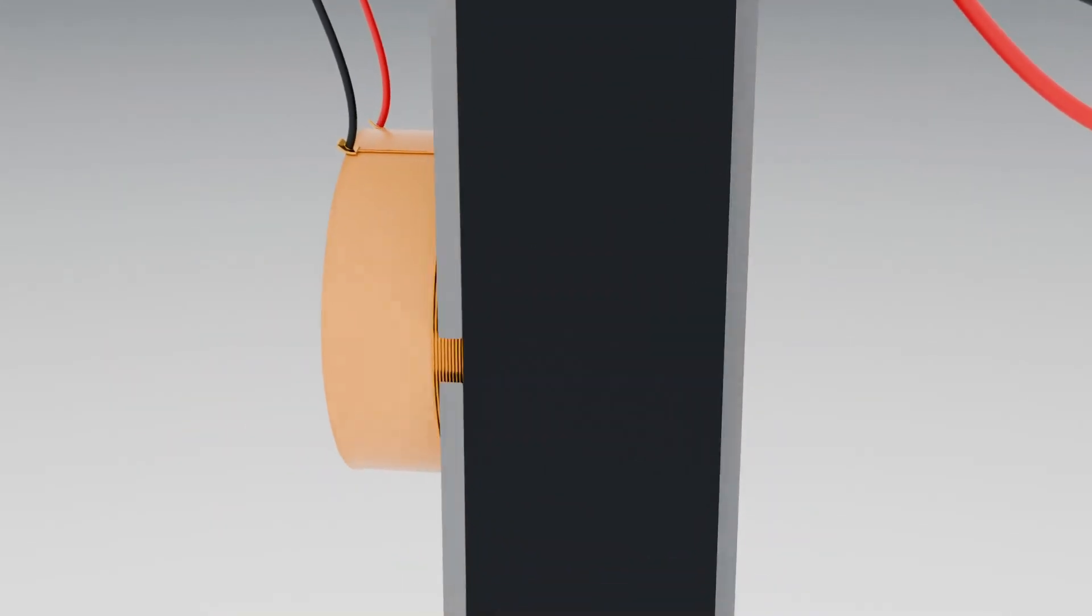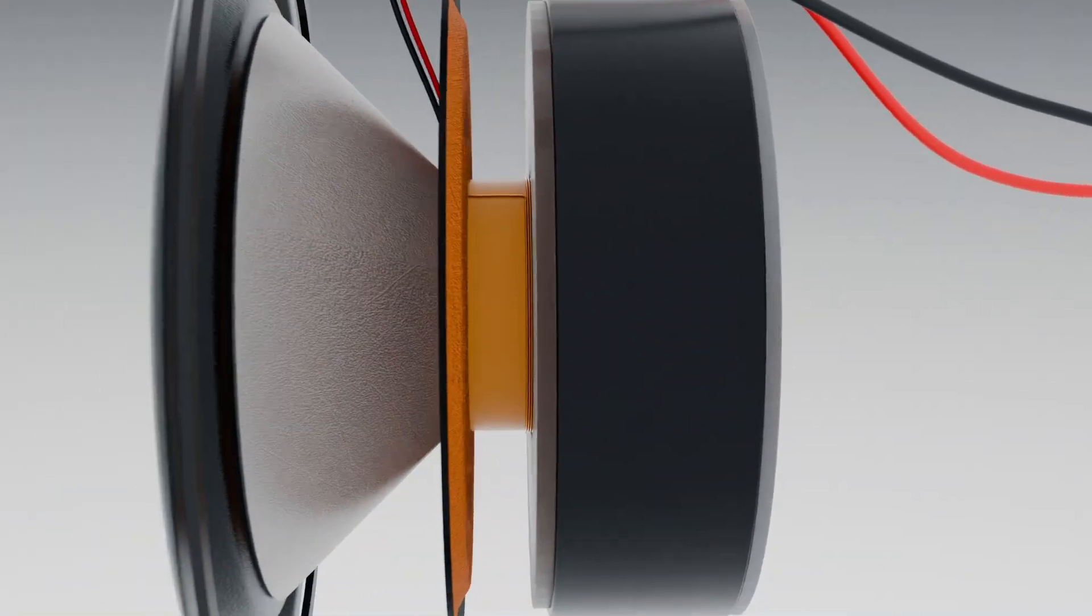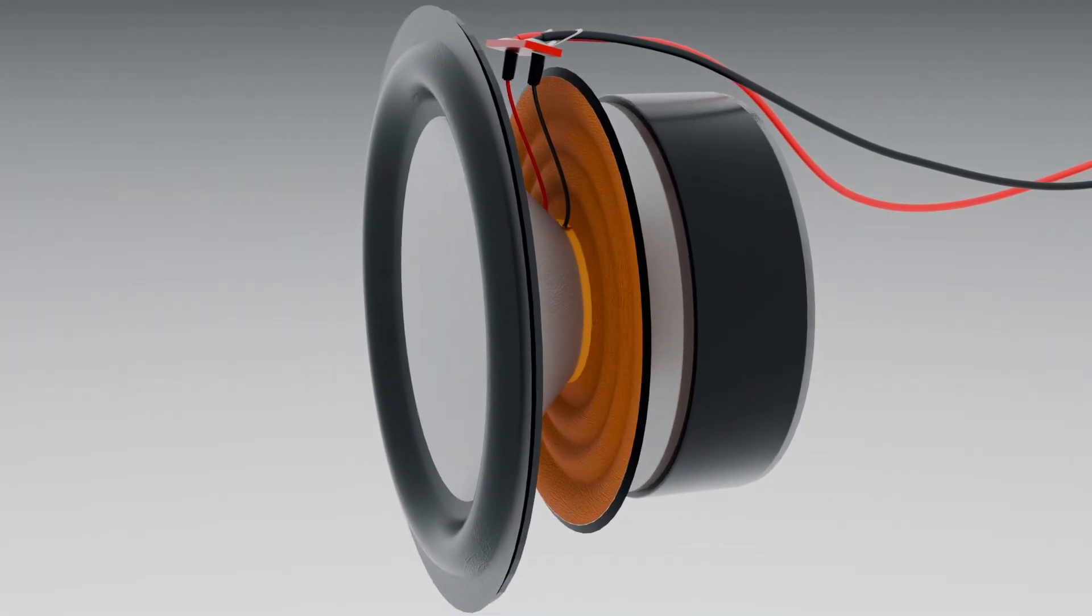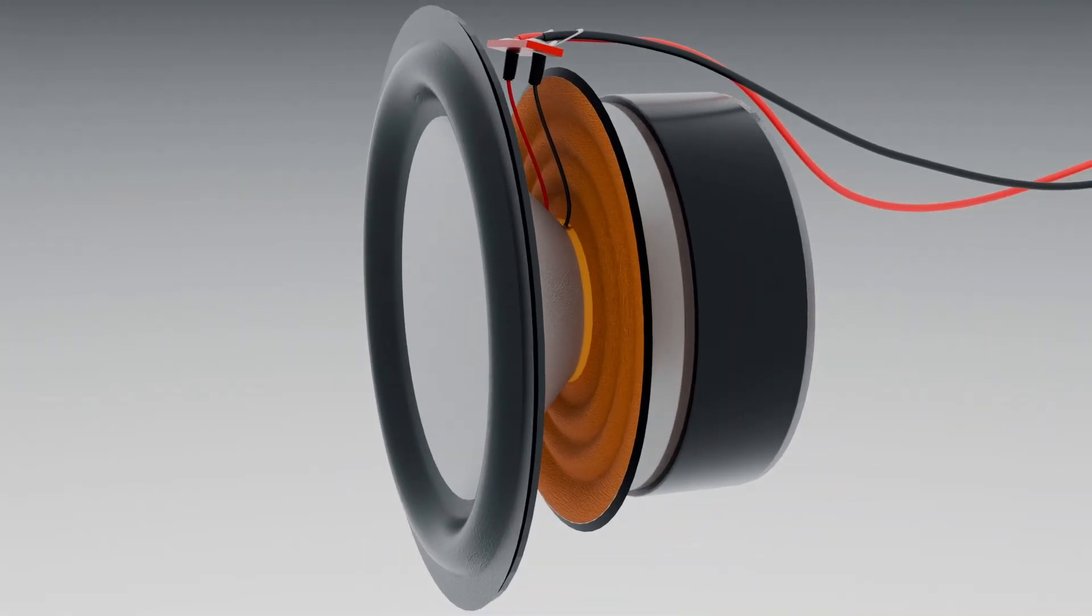For stable and smooth cone movement, suspensions made of elastic material are used. Suspensions are crucial for improving the quality of the sound produced. There are two suspensions in total, one around the upper circumference of the cone and one below the cone.